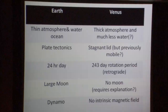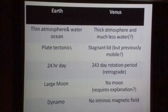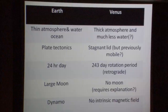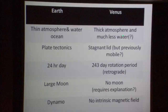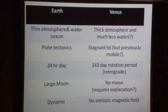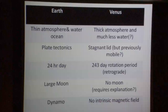Earth of course has a thin atmosphere, primarily nitrogen and some oxygen, and a water ocean. Venus has a thick atmosphere because the CO2 component is in the atmosphere rather than bound up in rocks, and we think it has much less water. We do not know how much water Venus has — it's only assumed that there is no water in the interior, but we do not actually know that. The part of Venus we have access to is largely devoid of water.